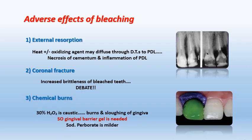The third adverse effect is chemical burns. Since bleaching materials are very caustic, soft tissue protection is extremely important. This is achieved by applying a gingival barrier or gingy gel — a gel that comes in a syringe, is injected onto the soft tissue around the tooth, and is light-cured to set hard. This prevents leakage of bleaching material onto soft tissue. Milder bleaching agents can also be used, though the agent is always selected based on the technique, degree of discoloration, and desired outcome.